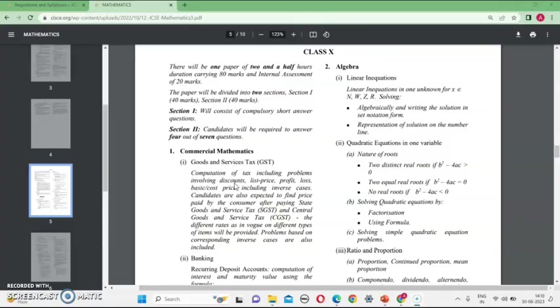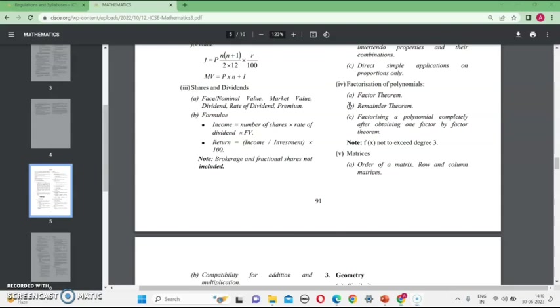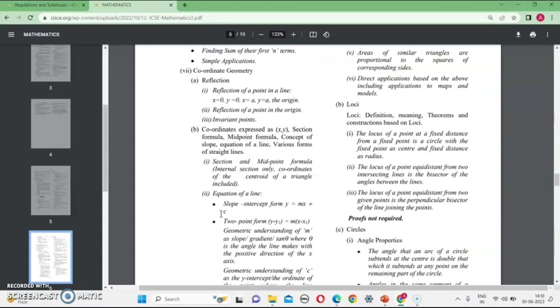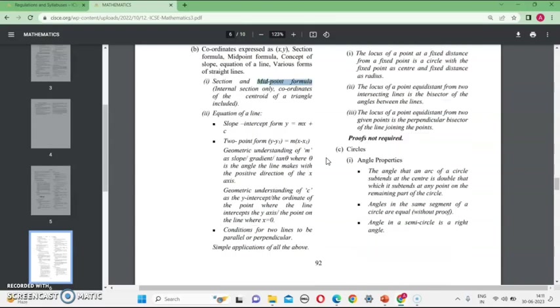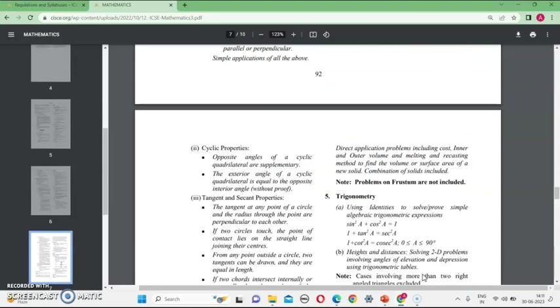Even from the syllabus, you can decode the questions which are going to come. I can easily tell that one question from GST, one from banking, then one from ratio proportion. The remainder theorem part, that is going to come for sure. Then matrices, one question. Reflection, one question. Midpoint formula, one is two, three. They will give you as the coordinates. Then circles, all properties are important. Please do them by heart. Practice a lot in this chapter.